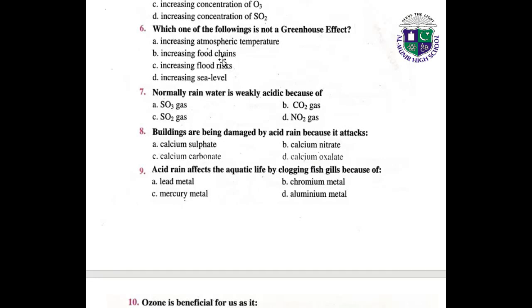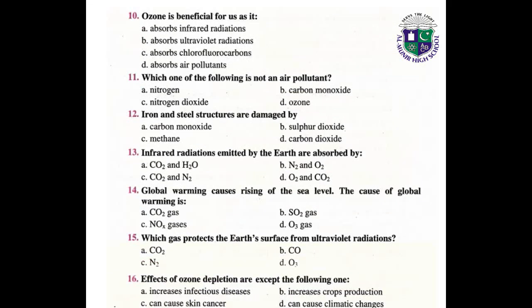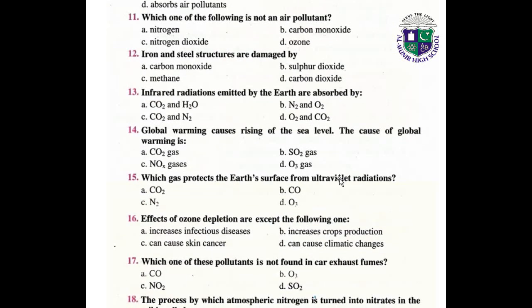Question 6: correct answer is B: increasing food chains. Question 7: correct answer is B: carbon dioxide gas. Question 8: correct answer is C: calcium carbonate. Question 9: correct answer is D: aluminum metal. Question 10: correct answer is B: absorbs ultraviolet radiations. Question 12: correct answer is B: sulfur dioxide. Question 13: correct answer is B: N2 and O2. Question 14: correct answer is A: carbon dioxide. Question 15: correct answer is D: ozone.